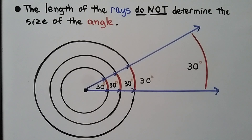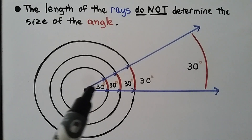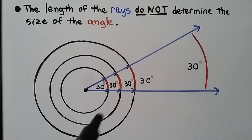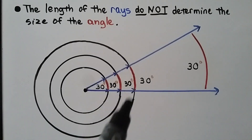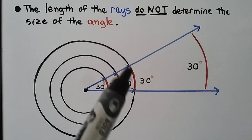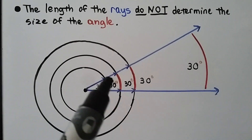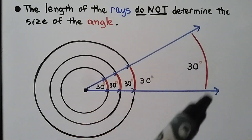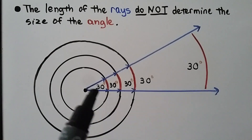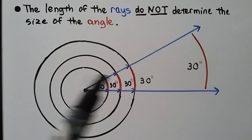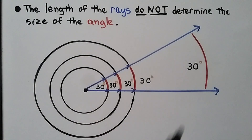The length of the rays does not determine the size of the angle. Here we have a 30-degree angle, and whether we look at a small circle, a bigger circle, or extend the rays very far, they are all still 30-degree angles. It doesn't matter how long the rays are — making an angle in a bigger circle just means the circle is bigger, not that the angle is larger.